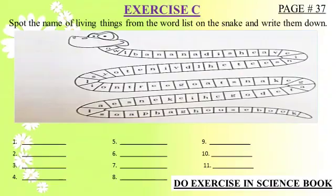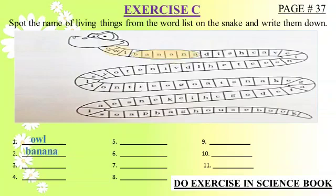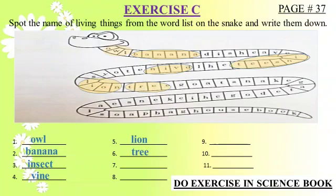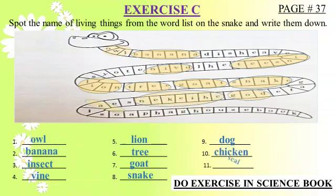Do exercise in science book. Now students, come to page number 37. Spot the names of living things from the word list on the snake and write them down. The living things are: 1. Owl, 2. Banana, 3. Insect, 4. Vine, 5. Lion, 6. Tree, 7. Goat, 8. Snake, 9. Dog, 10. Chicken, 11. Seal. All words are living things.